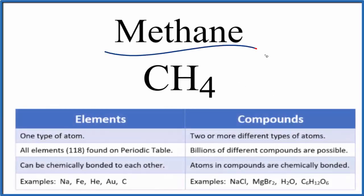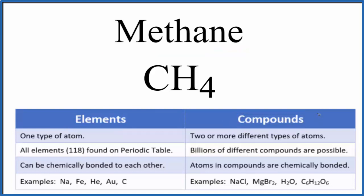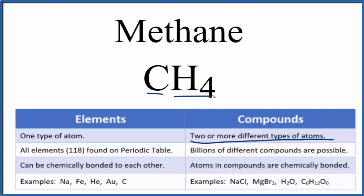The question is whether methane is an element or a compound. If we know the chemical formula for methane — that's CH4 — we can right away see that we have more than one type of atom. If we have two or more different types of atoms, like the carbon and hydrogen atoms here, it's going to be a compound. So we know methane is a compound.